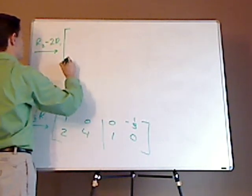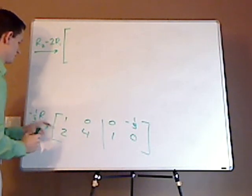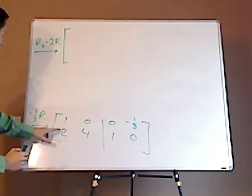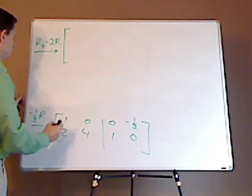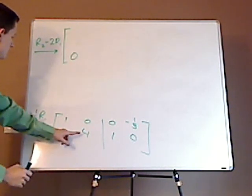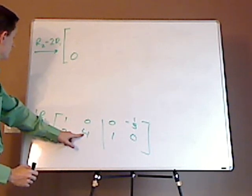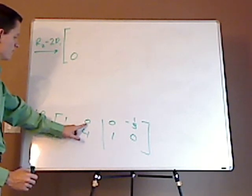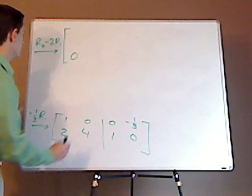So, when I do that, two minus two is zero. This is four, right, that's what I'm starting off with, four minus zero is four.